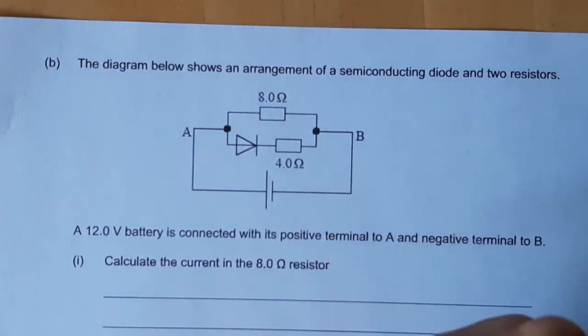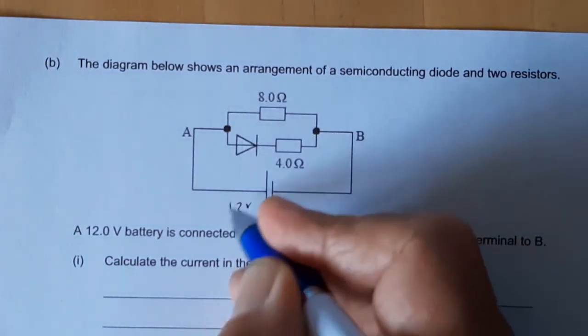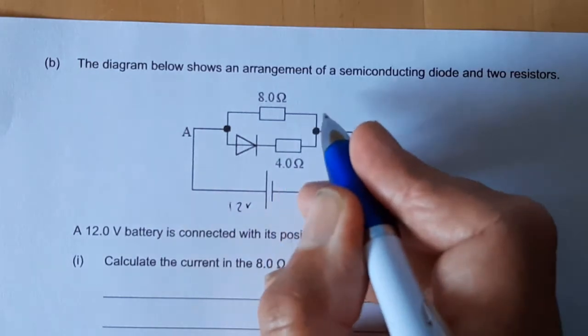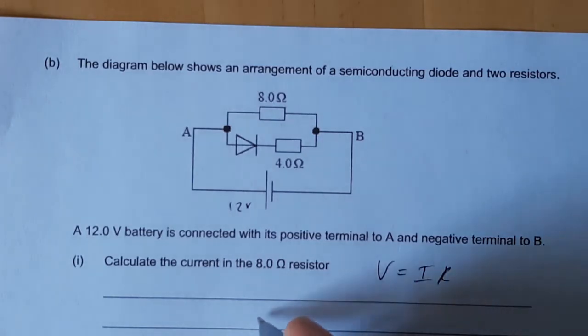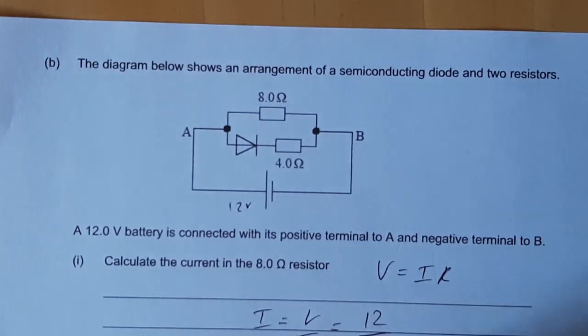Now I haven't talked a lot about series and power, but that's 12 volts and you can see that 12 volts is connected directly to that 8 ohm resistor. So we can just say V equals IR. So I is equal to V divided by R, which is 12 divided by 8, which is 1.25 amps.